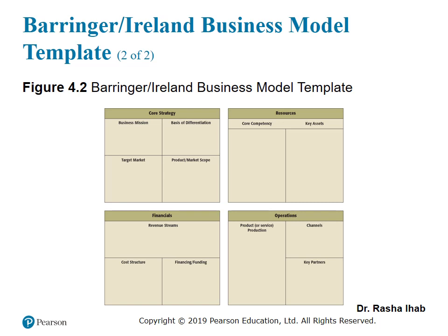The Baringer and Ireland business model consists of four blocks. The first block is the core strategy, subdivided into four parts: business mission, basis of differentiation, target market, and product market scope. The second block is the resources, consisting of core competency and key assets. The third block is the financial, consisting of revenue stream, cost structure, and financing and funding. The fourth block is the operations, which consists of product or service production, channels of distribution, and key partners.